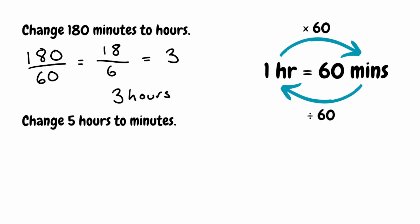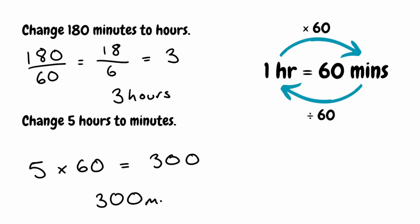We can use our unit conversion for the next question as well. This time, we want to change 5 hours into minutes. Looking at our unit conversion, to get from hours to minutes we multiply by 60. So we do 5 times 60, which gives us 300. So 5 hours is simply 300 minutes.